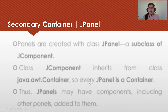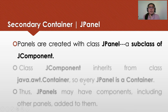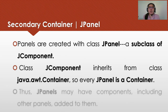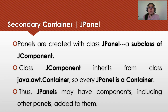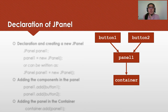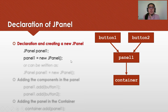We also have secondary containers such as JPanel. Panels are created with class JPanel, which is a subclass of JComponent. The class JComponent inherits from Java.AWT.Container, so every JPanel is a container. Thus, JPanels may have components including other panels added to them. For declaration of JPanel, the syntax is: JPanel panel1 = new JPanel. Or it can be written on separate lines: JPanel space reference name, then panel1 = new JPanel.